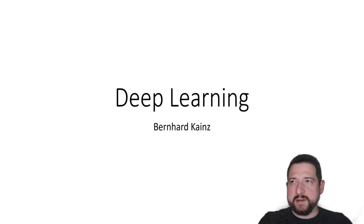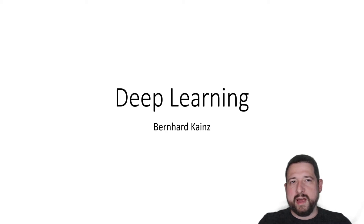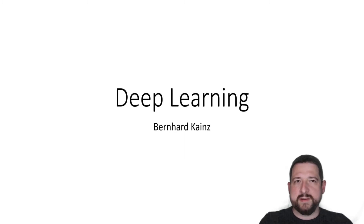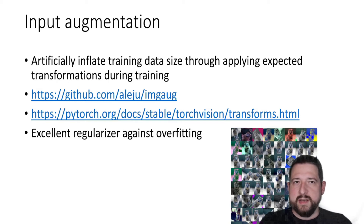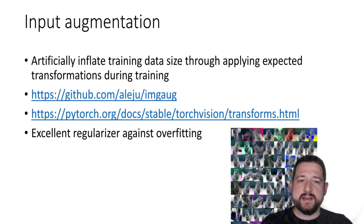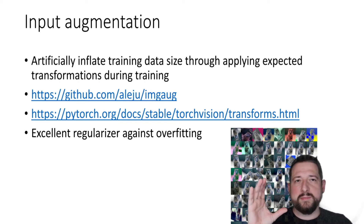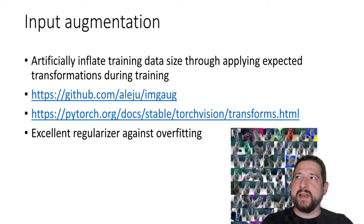You can do something about this problem without taking billions of images. One standard approach for training networks is to artificially extend your training data — that's done through input augmentation or training data augmentation. It means you take what you have and artificially inflate the training data size by applying expected transformations. You take an image, rotate it a bit — that's your new sample — and every time you pick a training sample you transform it slightly differently, making your network robust to these changes.